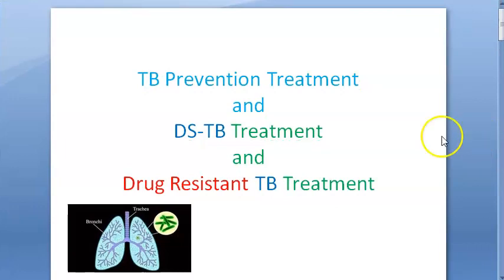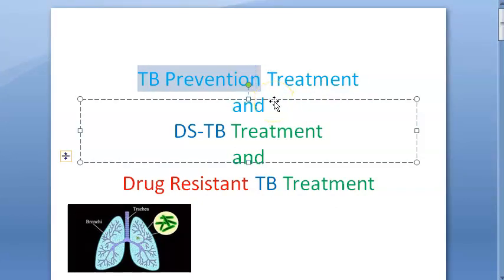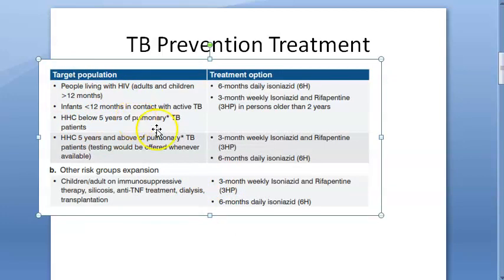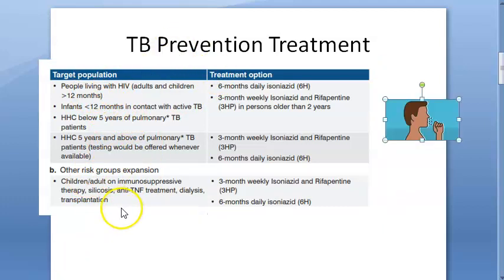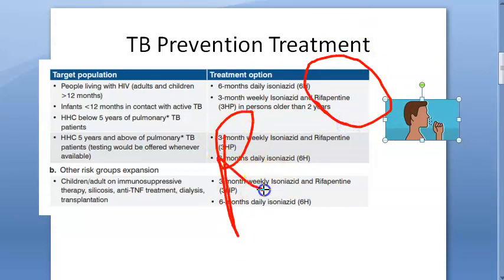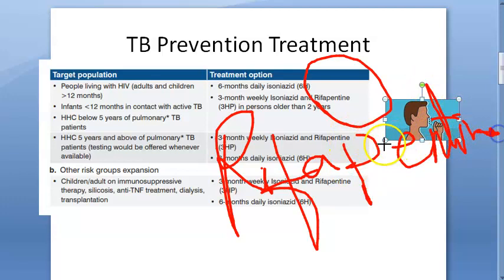Preventive treatment targets anyone you think is exposed and you want to prevent the formation of tuberculosis — people living with HIV, household contacts of an active TB case (HHC), and anyone who is immunosuppressed, such as those undergoing dialysis or transplantation. For prevention, the two drugs you give are isoniazid and rifapentine. Note: the 'R' here is not rifampicin — it is rifapentine, which is rifampicin-like but distinct.